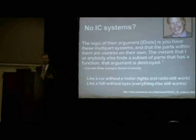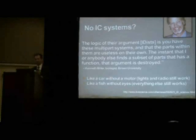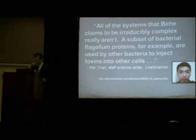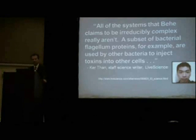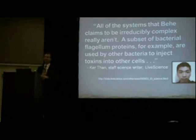For example, if I take a car and take out the motor, the lights and the radio still work. So is the car irreducible? According to Miller's argument, no — because the lights and the radio still work. Even though it doesn't have the motor anymore, it's not irreducible because something still works. Like a fish without eyes — everything else still works. You take out the eyes, you can't see anymore, but does the fish still work? Yes. So is the fish irreducible? Not irreducible, according to Miller. According to Miller, it's not irreducibly complex because you can take away a bunch of parts and the sub-parts will still work.